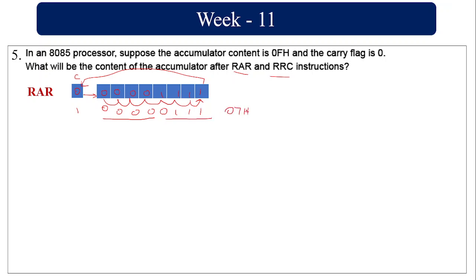So totally the value is 0000 0111, which is 07h. The accumulator content after RAR is 07h.